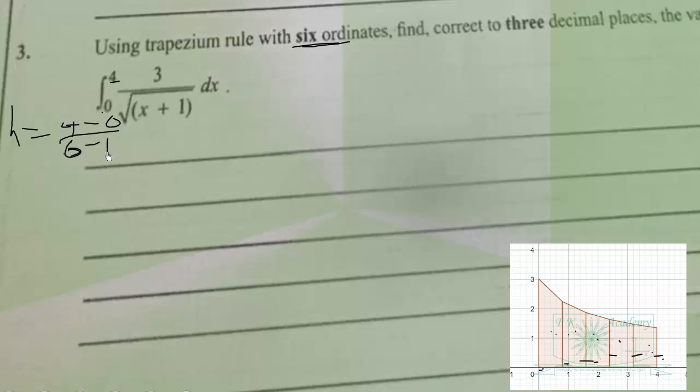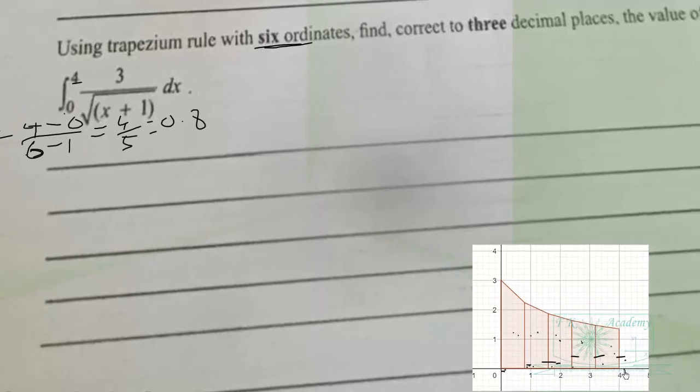Six minus one equals 5, which gives us h equals 4 over 5, or 0.8. So we add 0.8 to zero to get the first point, then add another 0.8 to get the next point, and continue until we get to 4.